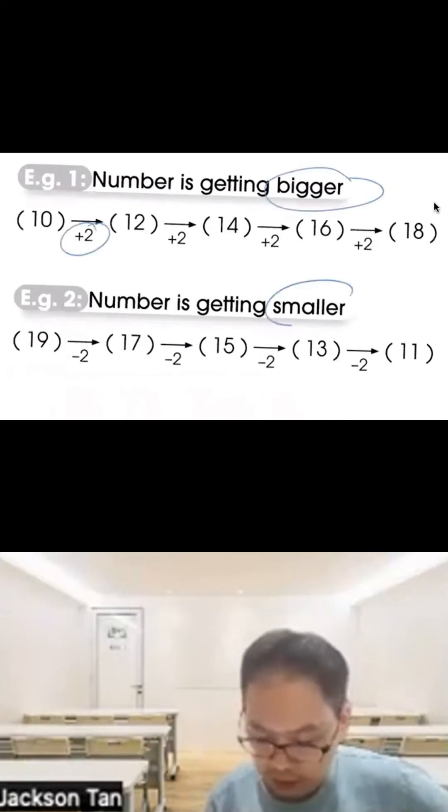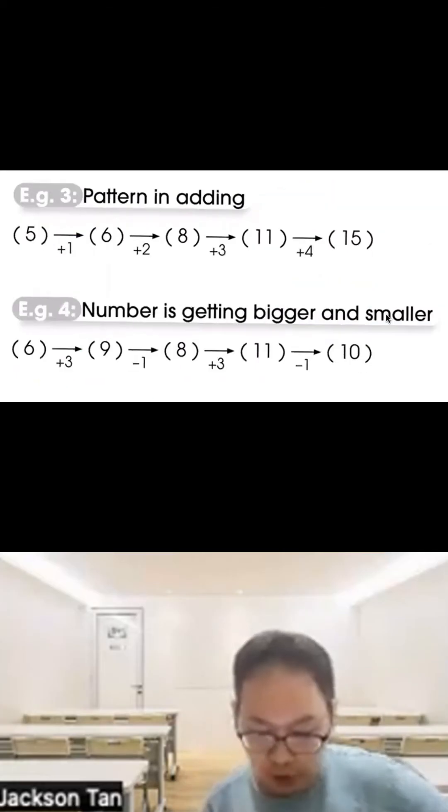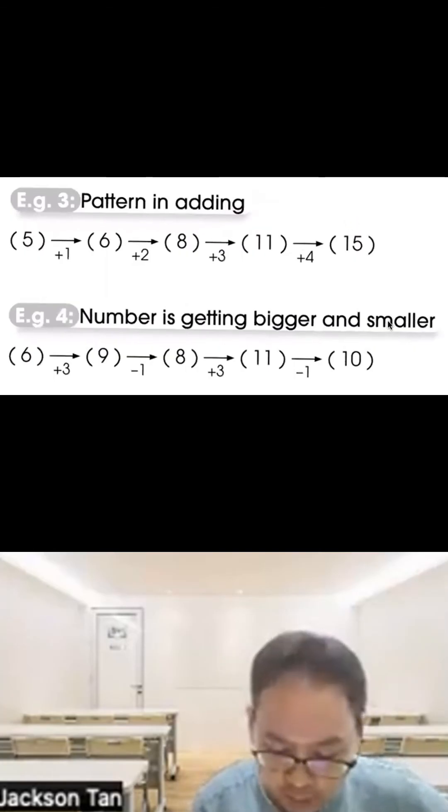Example 3: Pattern in adding. Sometimes from 5 to 6 to 8 to 11 to 15, the number is getting bigger. From 5 to 6 is plus 1, from 6 to 8 is plus 2, then plus 3, then plus 4.